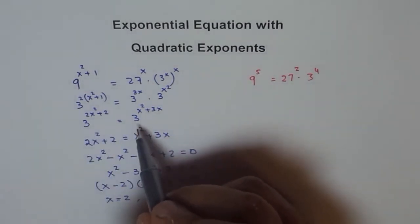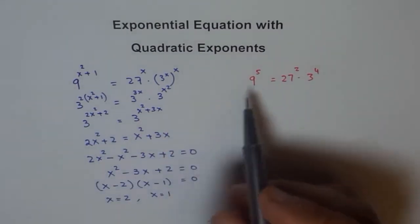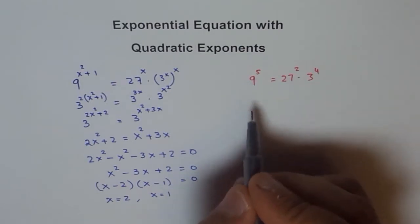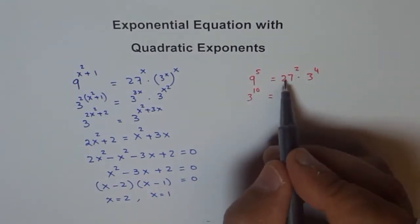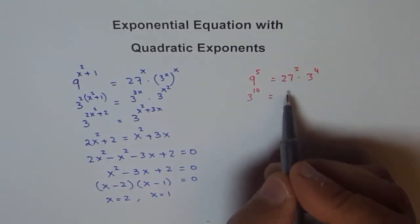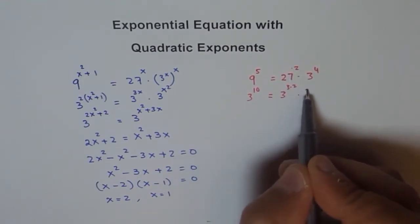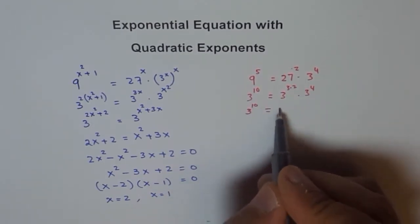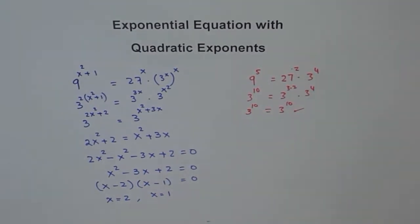It's easier to check using the base-3 form. Writing 9 as 3 squared gives 3 to the power of 10 on the left. Writing 27 as 3 cubed gives 3 to the power of 6, times 3 to the power of 4, which is 3 to the power of 10 on the right. Both sides match, so x equals 2 works.